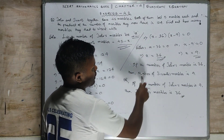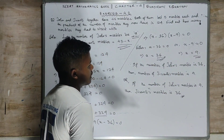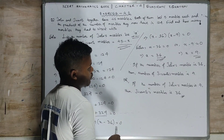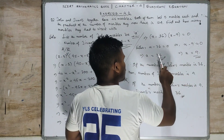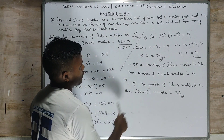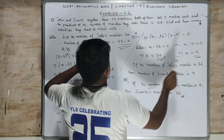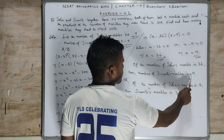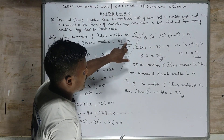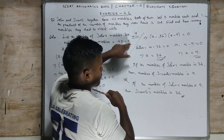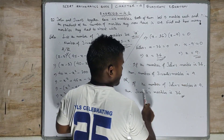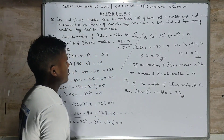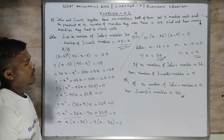Here we get two positive values: x equals 36 or x equals 9. If John's marbles are 36, then Zivante's marbles are 45 minus 36 equals 9. If John's marbles are 9, then Zivante's marbles are 45 minus 9 equals 36. So the two possible starting counts are 36 and 9 for John and Zivante respectively. Students, take a screenshot of this and write it down.